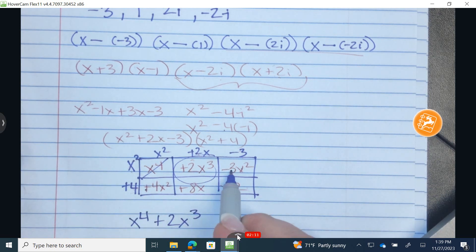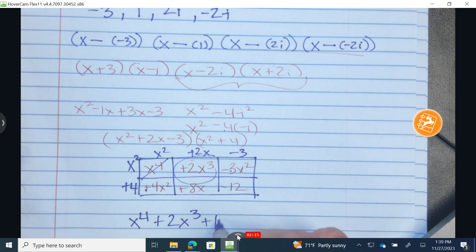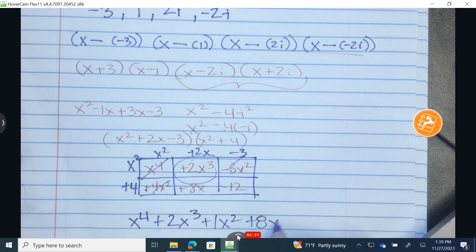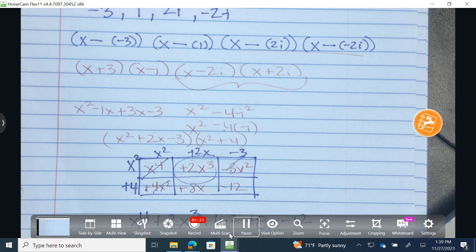Now we have two squares, a positive 4 and a negative 3. A positive 4 and a negative 3 is a positive 1x squared. There's 1, 8x and a negative 12. That is the correct answer for number 12.